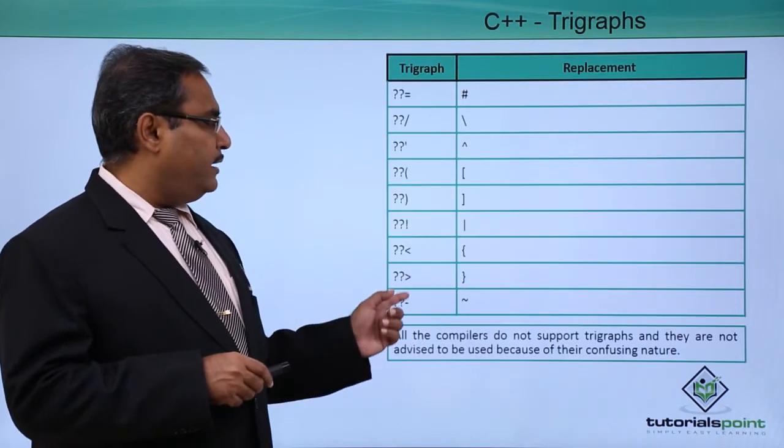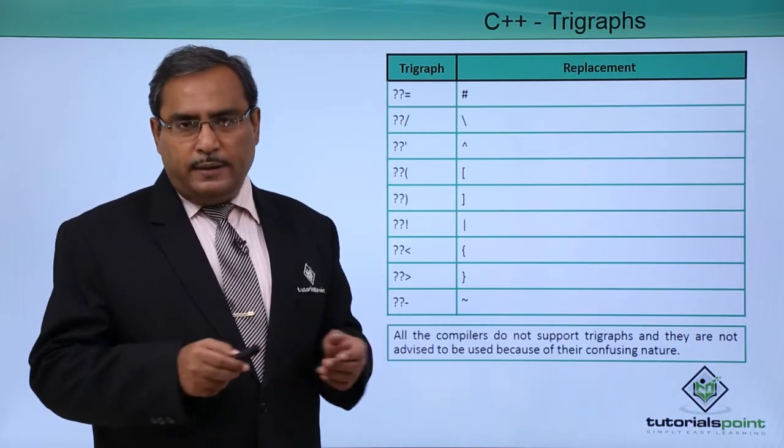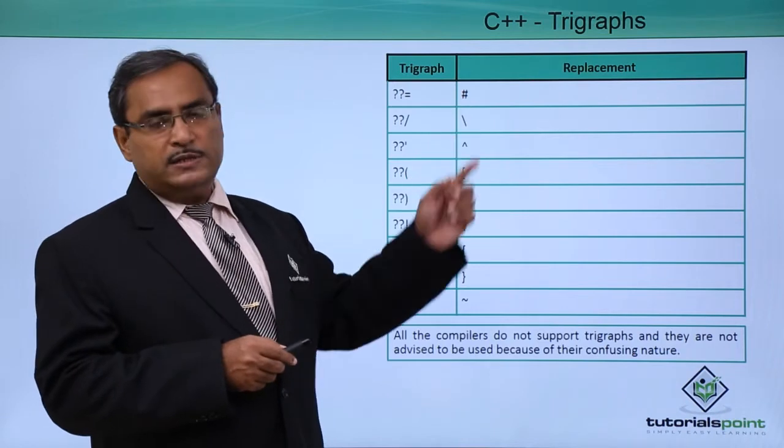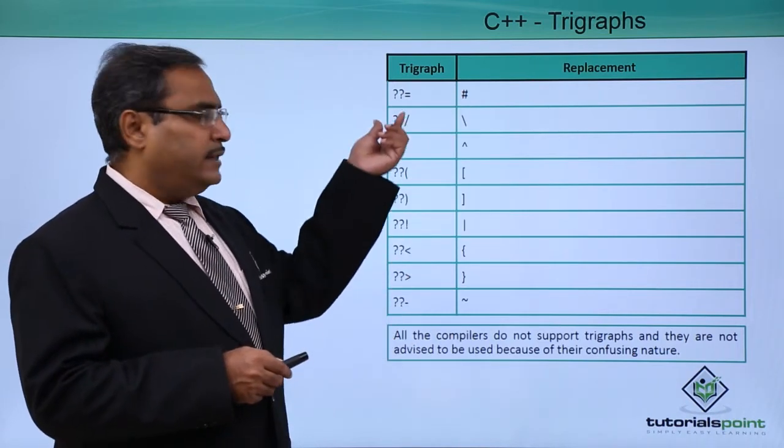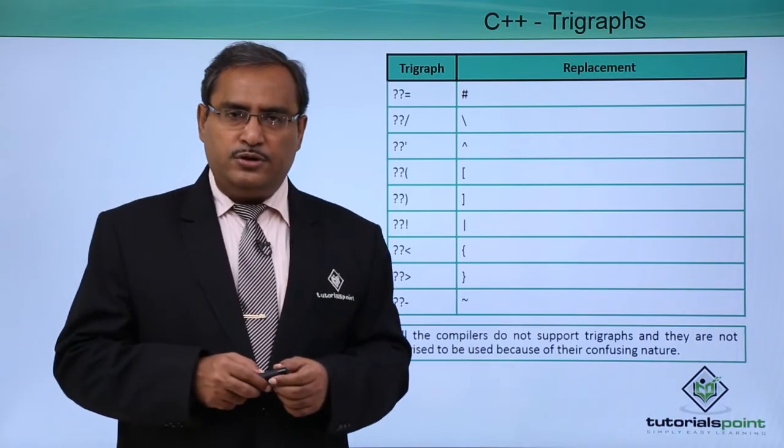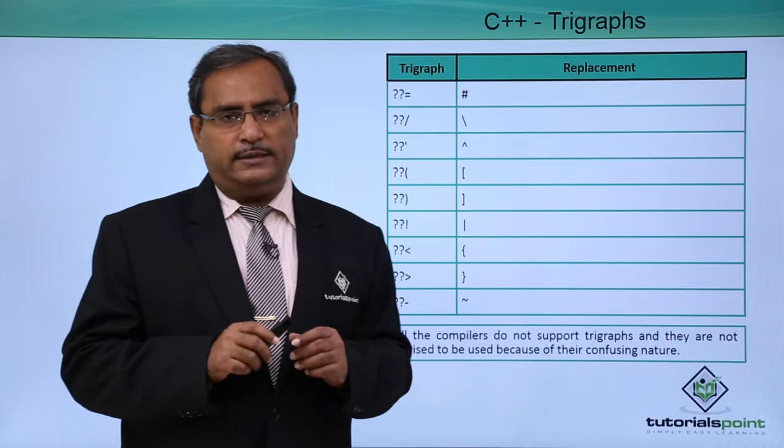Here you can see these are the trigraphs we are having. We are having this question mark question mark equal to, this will be replaced by this hash symbol and this is a sequence. Here you can find that each one of them are starting with two question marks symbols and they are in total three characters.